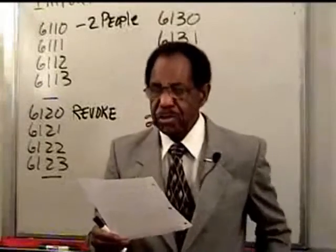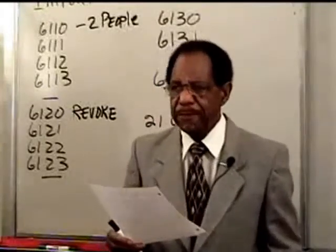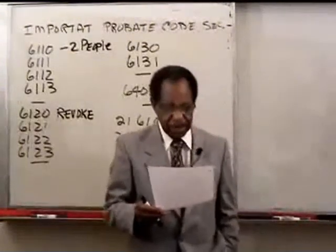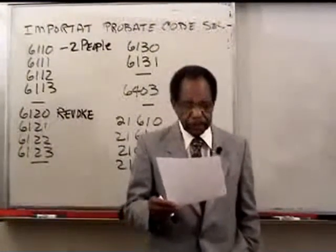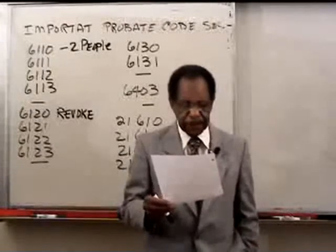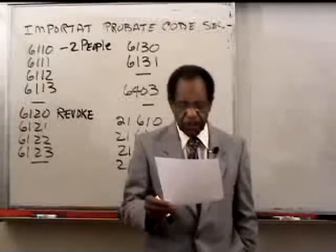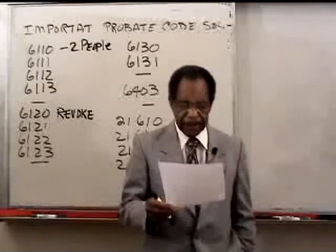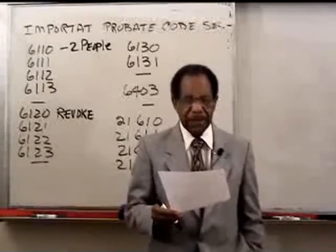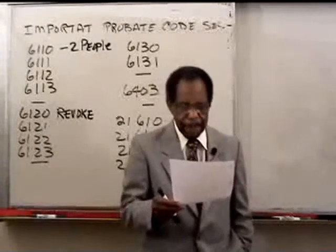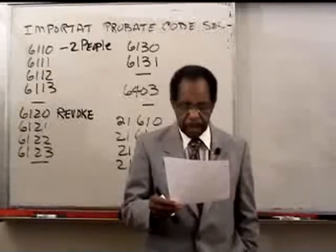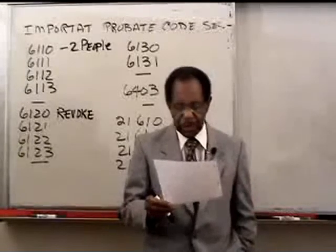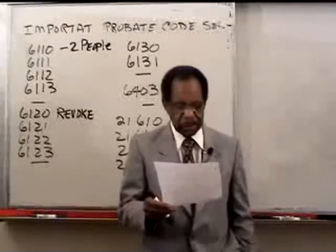The 1992 will is still very much in effect — it was not revoked by the 1995 document. Continuing at Line 31: after Tess's death, both wills were found in her safe deposit box. The 1992 will had a large X drawn across all of its pages.